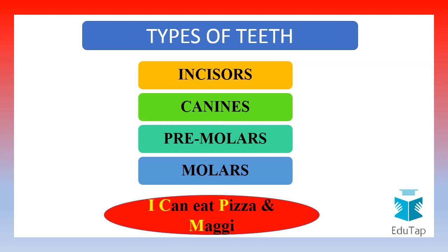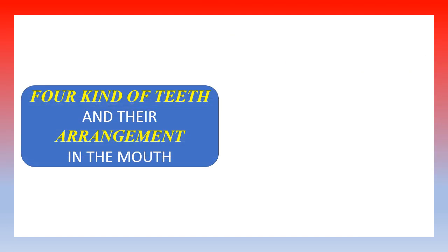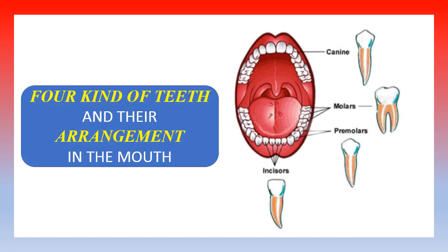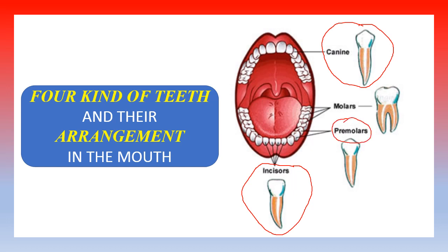I, C, P, and M are the initials of incisors, canines, premolars, and molars. This will help you understand and retain the order in which these four kinds of teeth appear in the jaw bone. The figure on your screen shows the arrangement of different kinds of teeth inside the mouth: first the incisors, next to them are the canines, then the premolars, and the last to appear in the jaw bone are the molars.